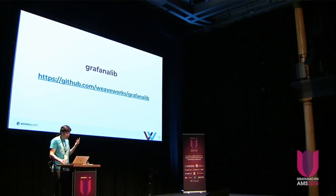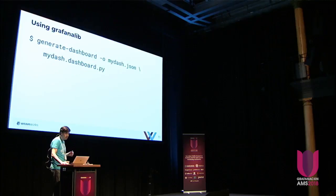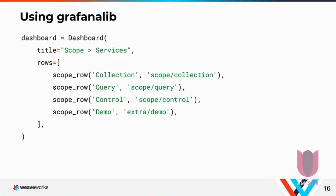So what we made is something called GrafanaLib, which you can clone from GitHub. GrafanaLib is a Python embedded domain-specific language for making Grafana dashboards. We released it in December 2016. It's got 21 contributors, I think about 15 of those are from outside Weaveworks, and it's got a lot of stars on GitHub by my standards. It's a command line tool called generate-dashboard. You give it a file called something.dashboard.py, and it outputs a dashboard.json. You define a top-level dashboard variable, and then you just say here's my title, here are my rows. And then you can have a special custom function that you use internally for defining what a scope row looks like.